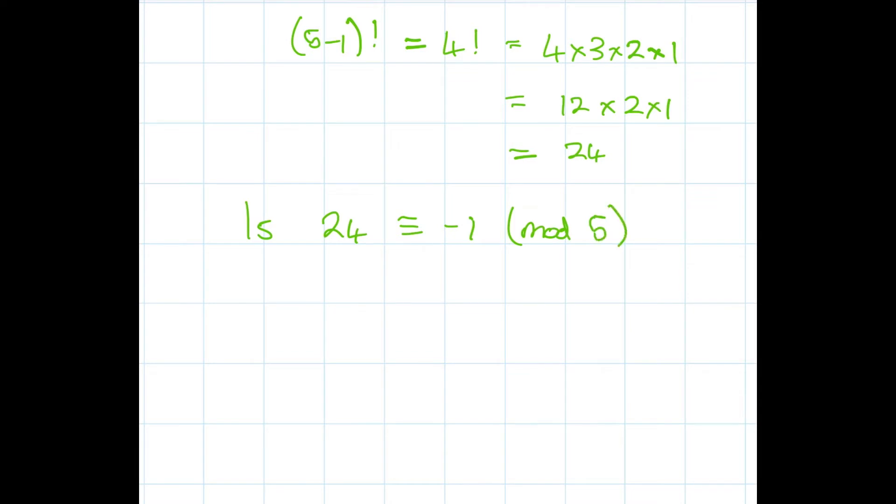Remember the definition of congruence: A is congruent to B mod n if and only if n divides a minus b. In other words, a minus b is some multiple of n. If you haven't seen that definition before, it's fairly common in number theory.